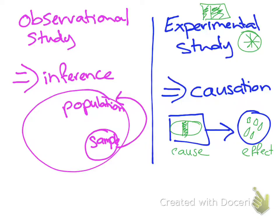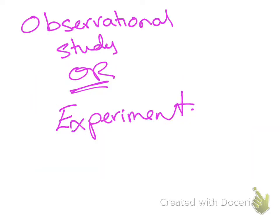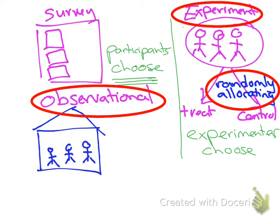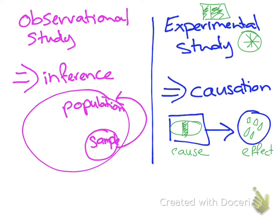First of all, decide is it observational? Is it experimental? Was there random allocation done? If I've done that random allocation, we've got experimental data. The experimenter allocated people into treatment and control groups. And if I have one or the other, can I make an inference or can I show causation?